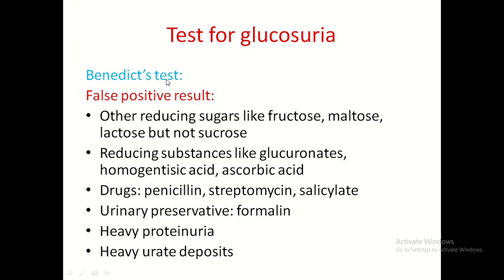A false positive result in Benedict test may be due to other reducing sugars other than glucose: fructose, maltose, and lactose — but not sucrose. Non-sugar reducing substances may also give a positive result, including glucuronates, homogentisic acid, and ascorbic acid. Some drugs also cause false positive reactions: penicillin, streptomycin, and salicylates. Urinary preservative formalin and heavy proteinuria or heavy urate deposits may also give false positive results.